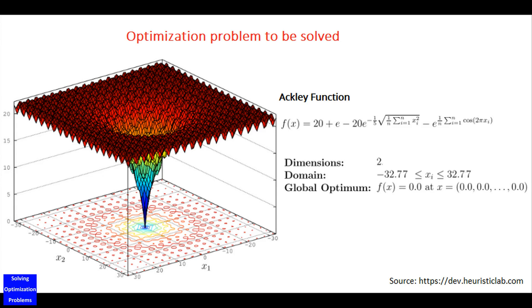Hello everyone. In this video I will show you a powerful binary genetic algorithm for unconstrained global optimization problems. This genetic algorithm is very powerful — it can guarantee to find the global optimal solution for your optimization problem with a very short computing time. First I'm going to demonstrate the performance of the genetic algorithm, and then I will show you the code of the genetic algorithm in MATLAB.